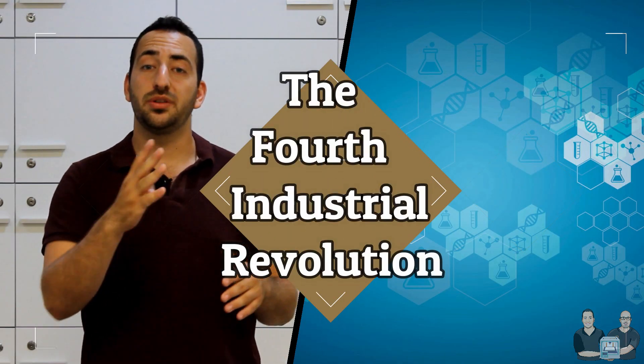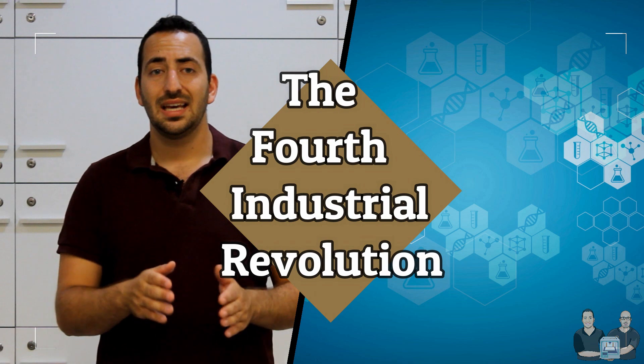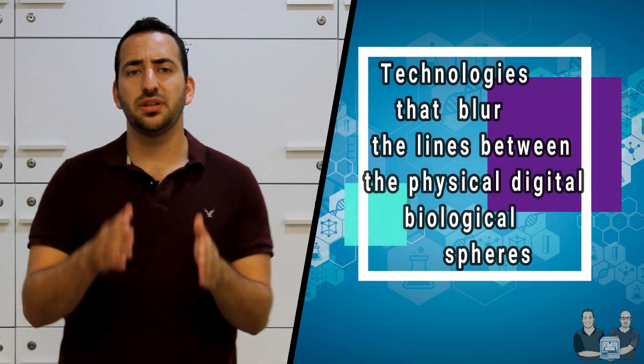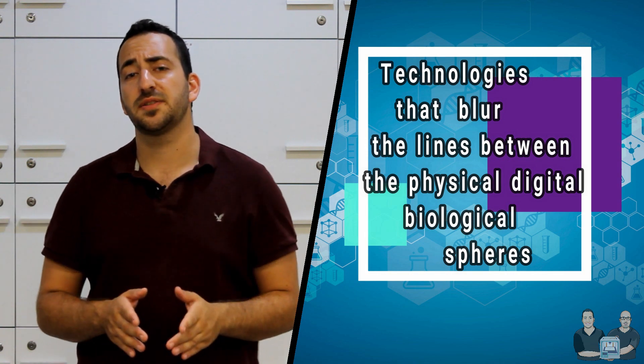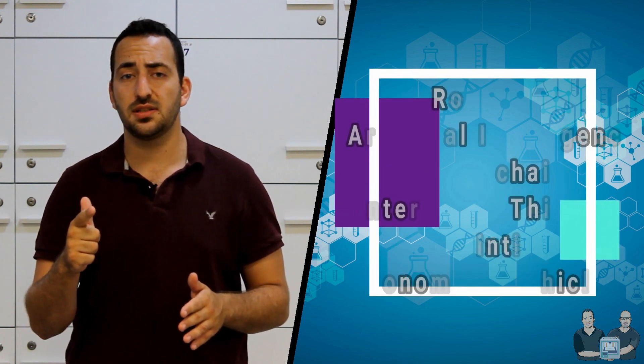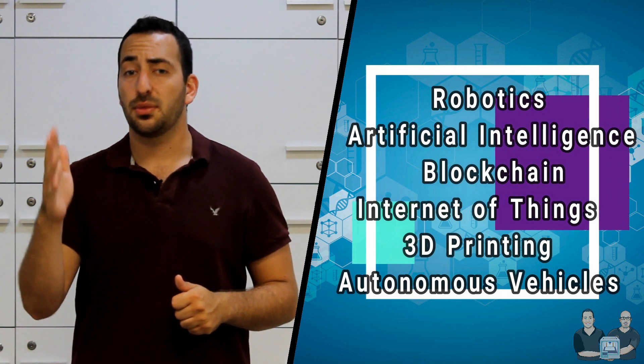Now, we have caught up with the fourth industrial revolution. It is characterized by a fusion of technologies that blur the lines between the physical, digital, and biological spheres. It is marked by several technological breakthroughs in many fields, including robotics, artificial intelligence, blockchain, internet of things, 3D printing, and autonomous vehicles.